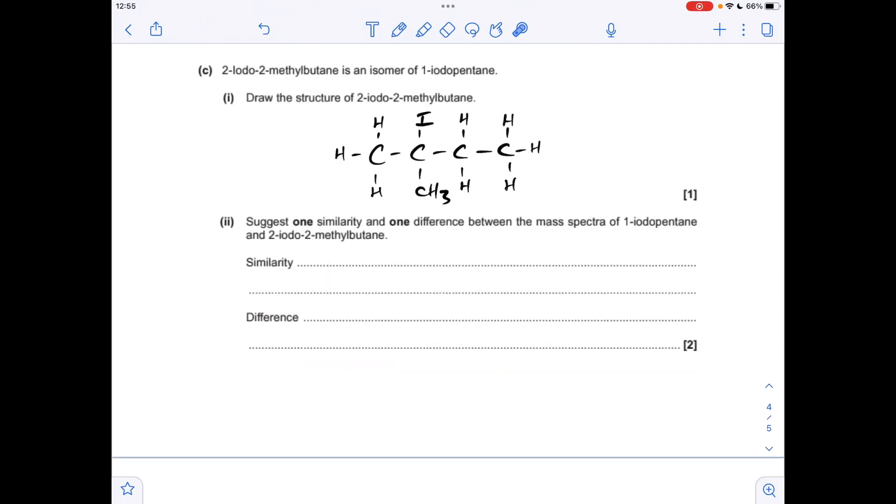Structure of 2-iodo-2-methylbutane, so we need a main chain of four for the butane part. Carbon number two has got the iodine on and a methyl group, so that's the answer there.